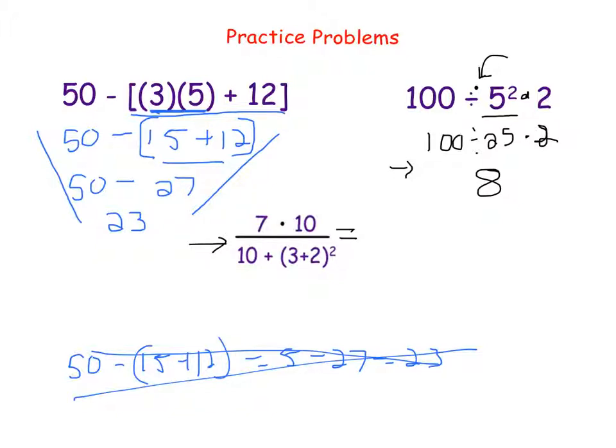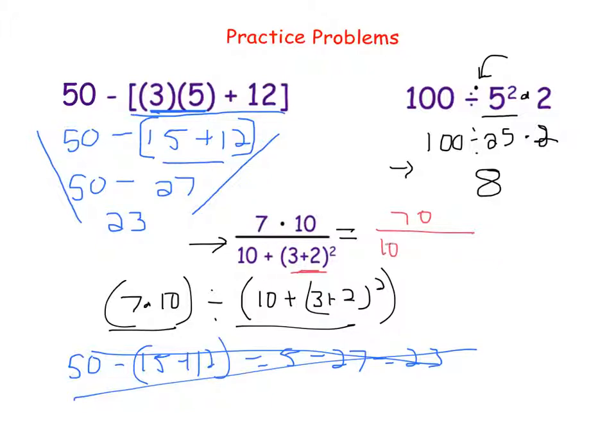Last problem like this. I said when there is a fraction bar, the fraction bar is almost like grouping symbols, or it is like grouping symbols. We could write this as 7 times 10 grouped together, because we're going to do that first, divided by the whole denominator 10 plus 3 plus 2 squared. So 7 times 10 is 70. And then I know down below I have to do this first. So 10 plus 5 squared. And then I keep going across 70 over 10 plus 25, because we do exponents before addition. And then 70 divided by 35 is 2.